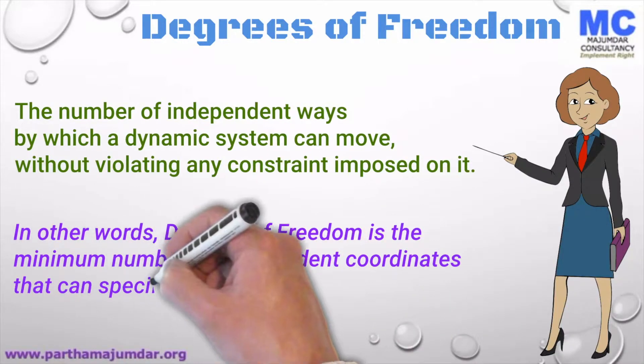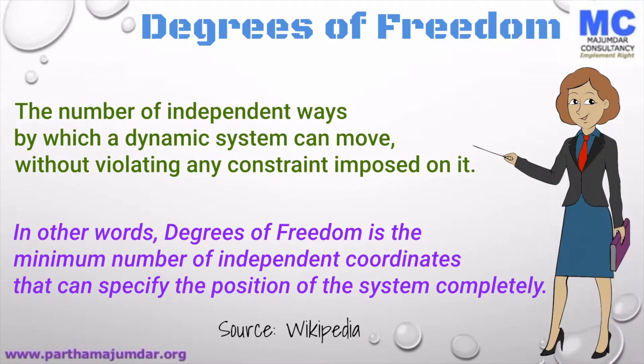In other words, degree of freedom is the minimum number of independent coordinates that can specify the position of a system completely. Let us look at the mathematical definition of the same.